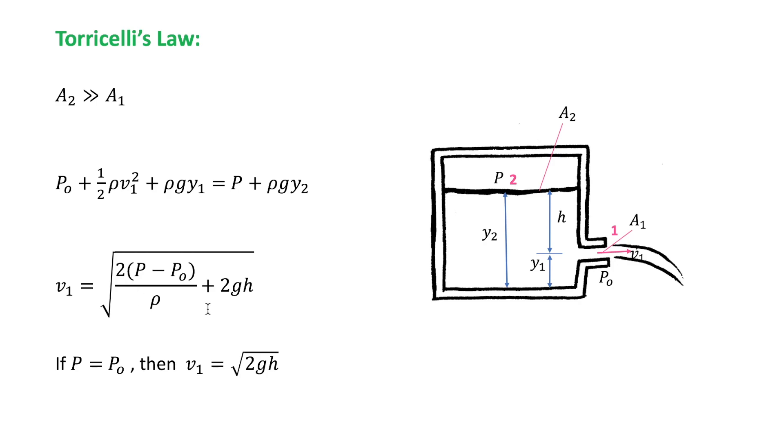Well, in the case if the tank is open to the atmosphere, then P will be equal to P0 and the exit speed will be equal to square root of 2GH, which is the same speed acquired by an object freely falling a distance of H.